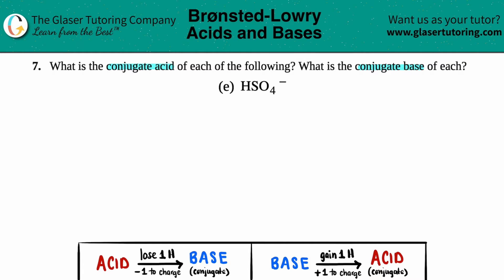Now if you can find both the conjugate acid and a conjugate base from a single ion, that means that this ion is amphoteric. It can act as both acid and a base.